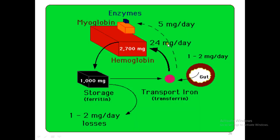Iron is lost in the desquamated cells of the GIT, the urinary tract, and the skin. However, in females, menstrual blood lost every month constitutes a major source of iron loss. The heme enzymes and non-heme enzymes contain iron, and myoglobin contains iron — the chief part is found in hemoglobin, with some iron stored as ferritin. One to two milligrams per day are lost, and from the gut the amount of absorbed iron is one to two milligrams per day. Iron is in an enclosed system, remaining in equilibrium, except in females where more iron is lost in every menstrual period.